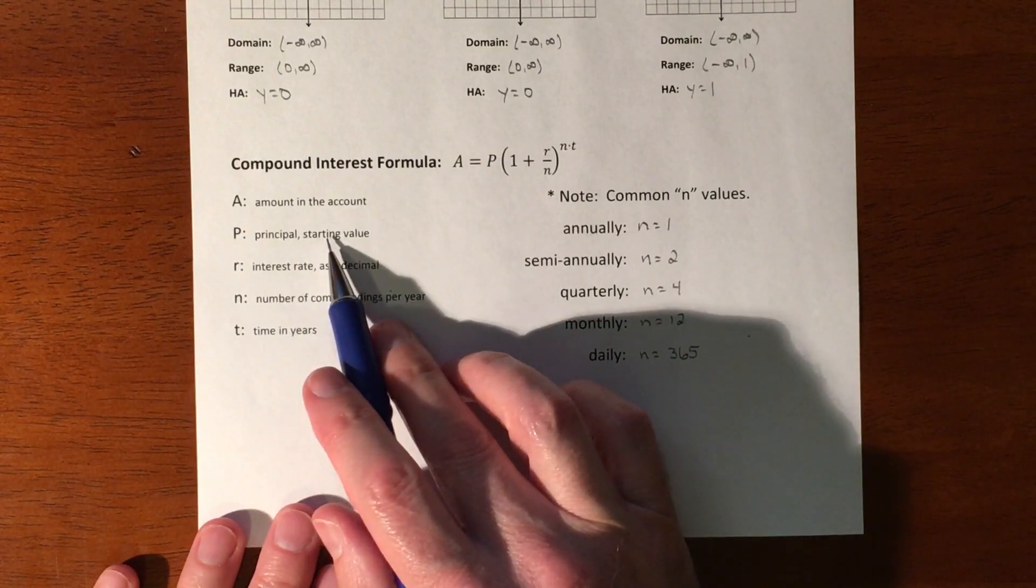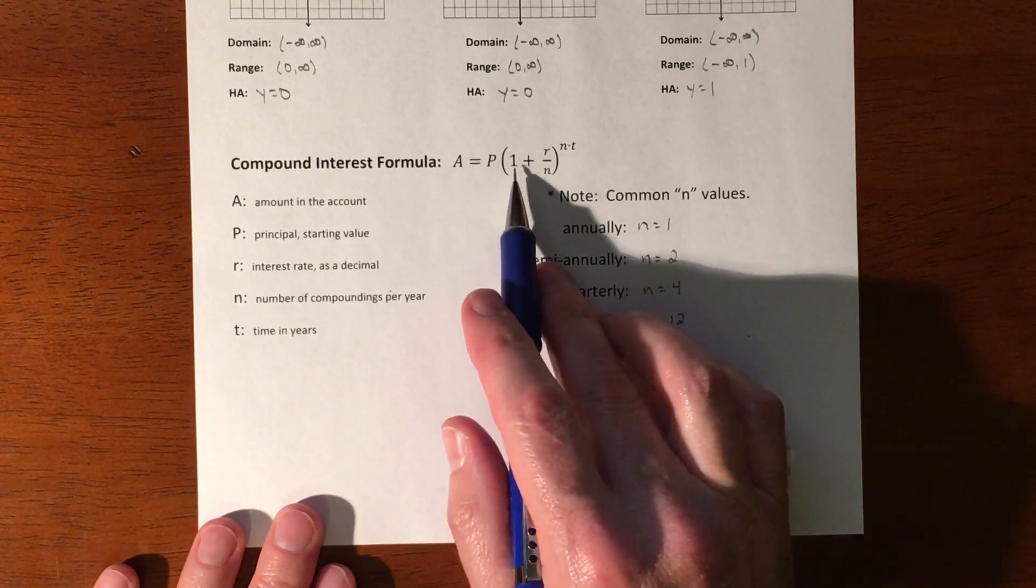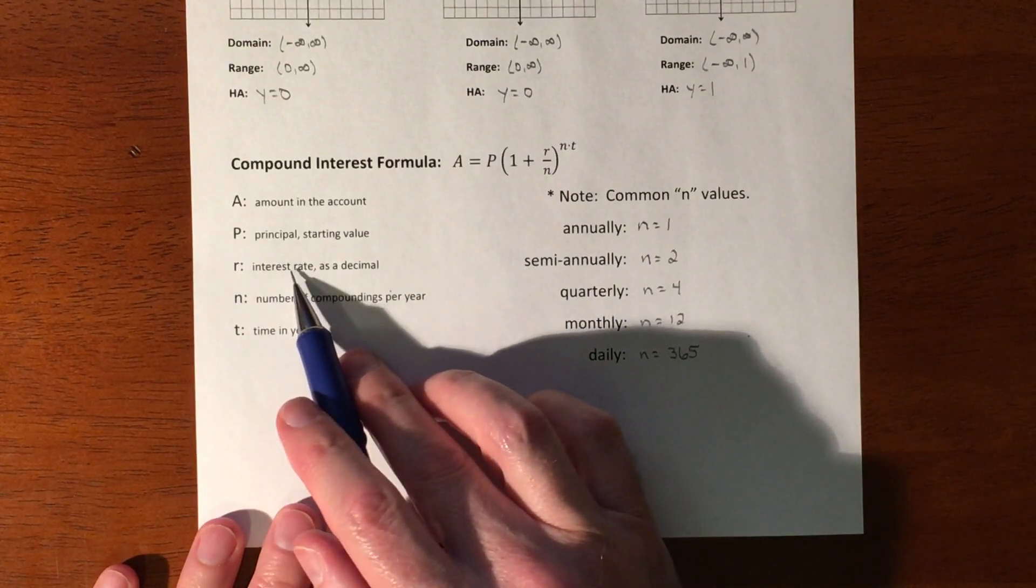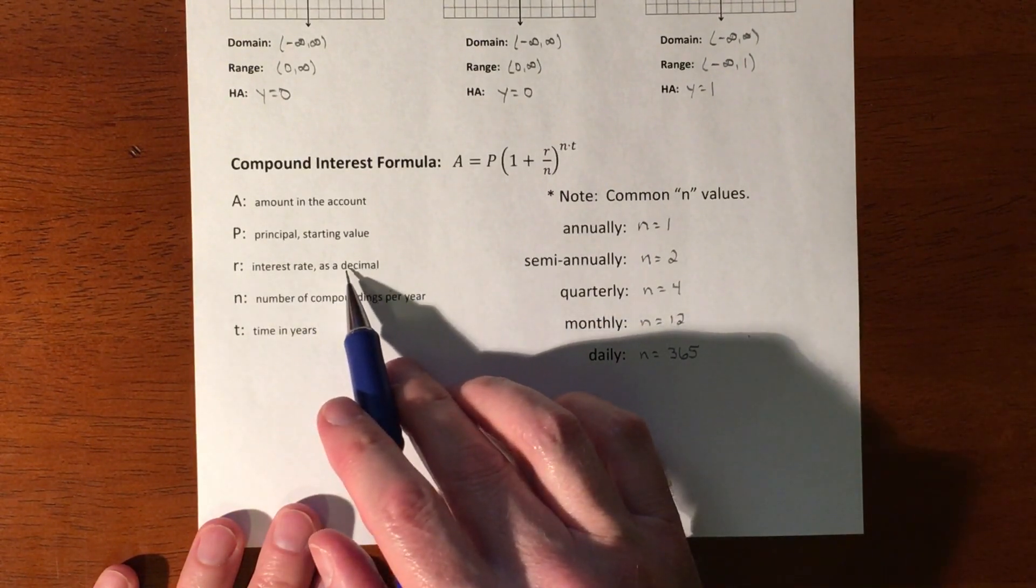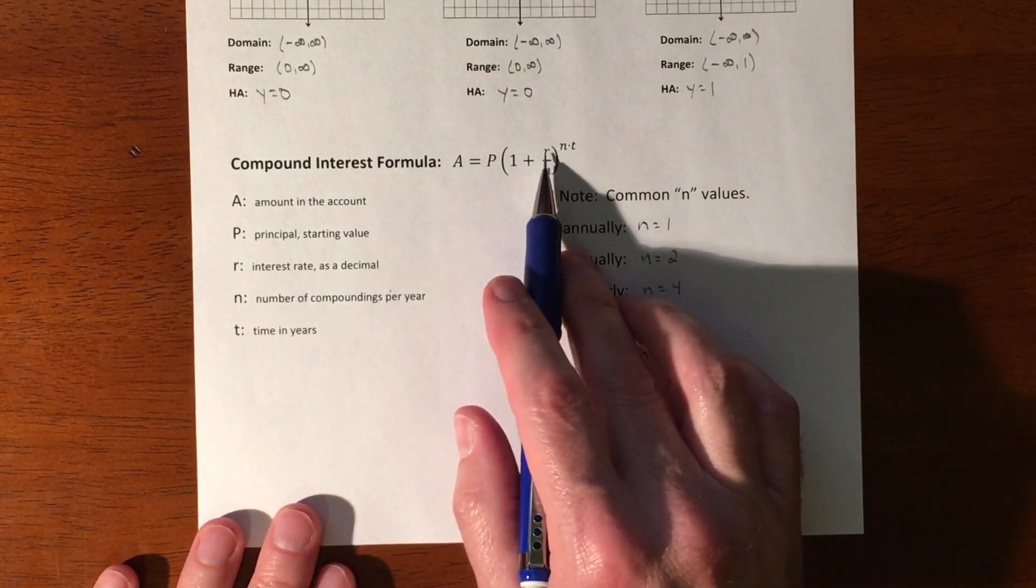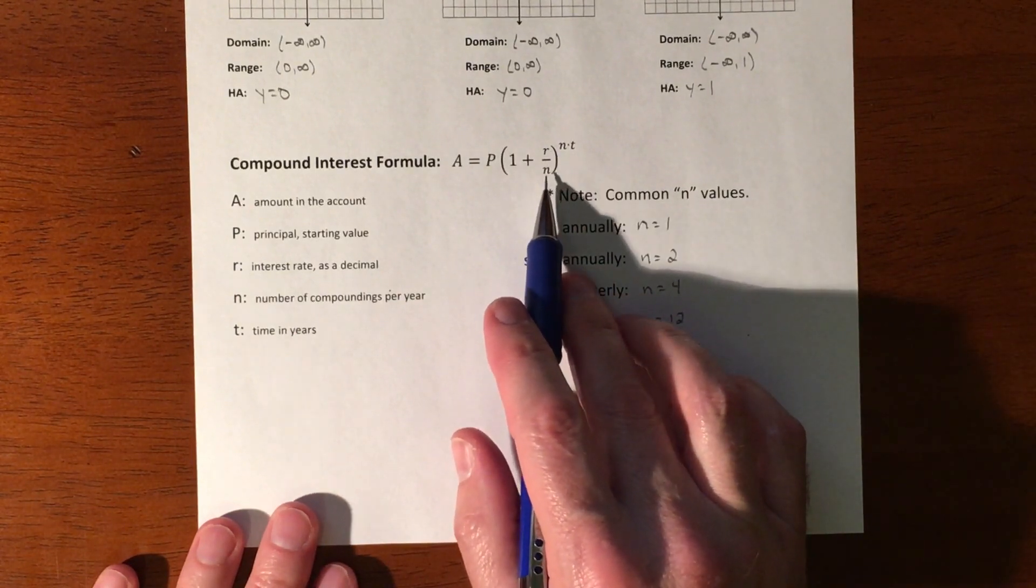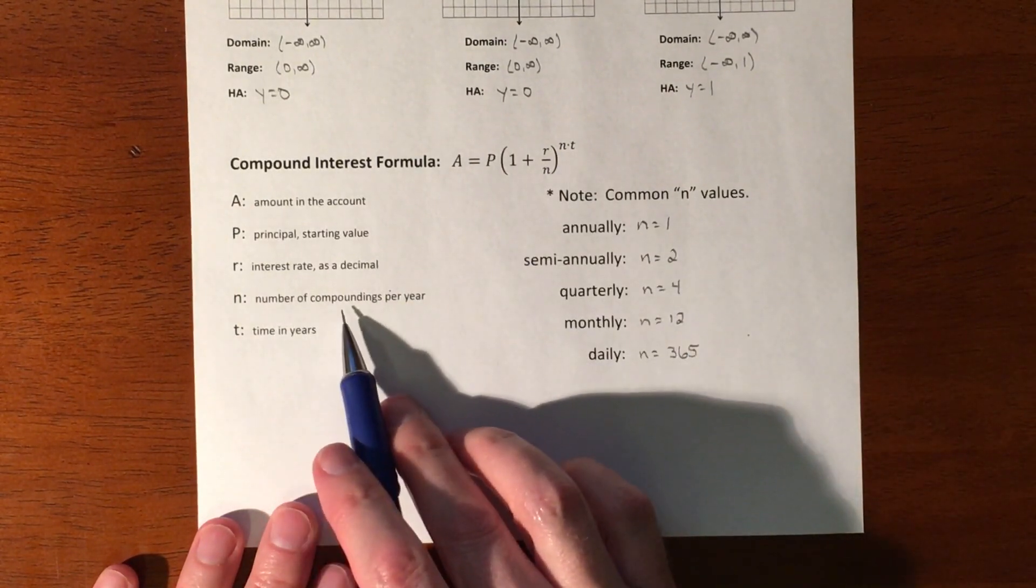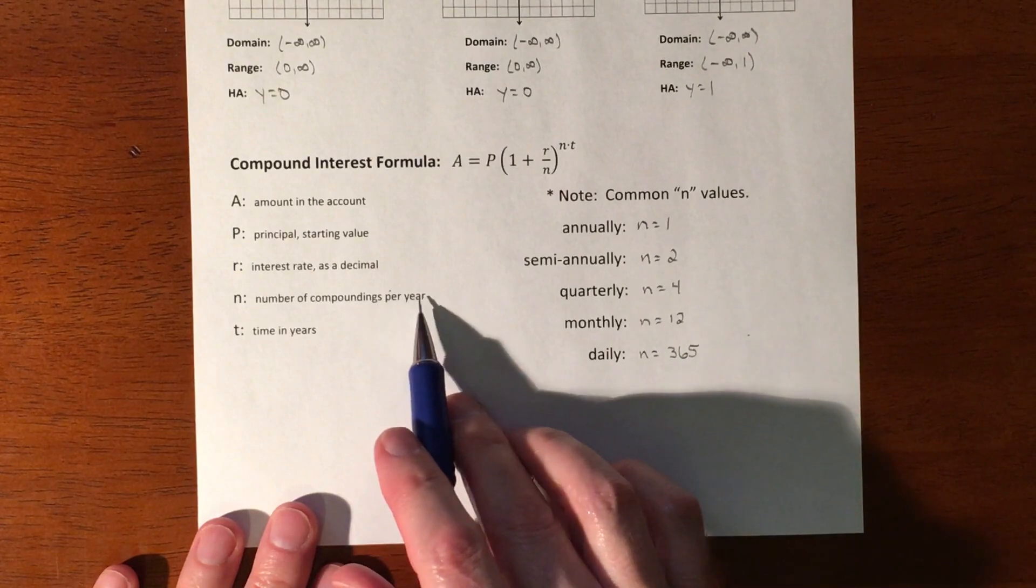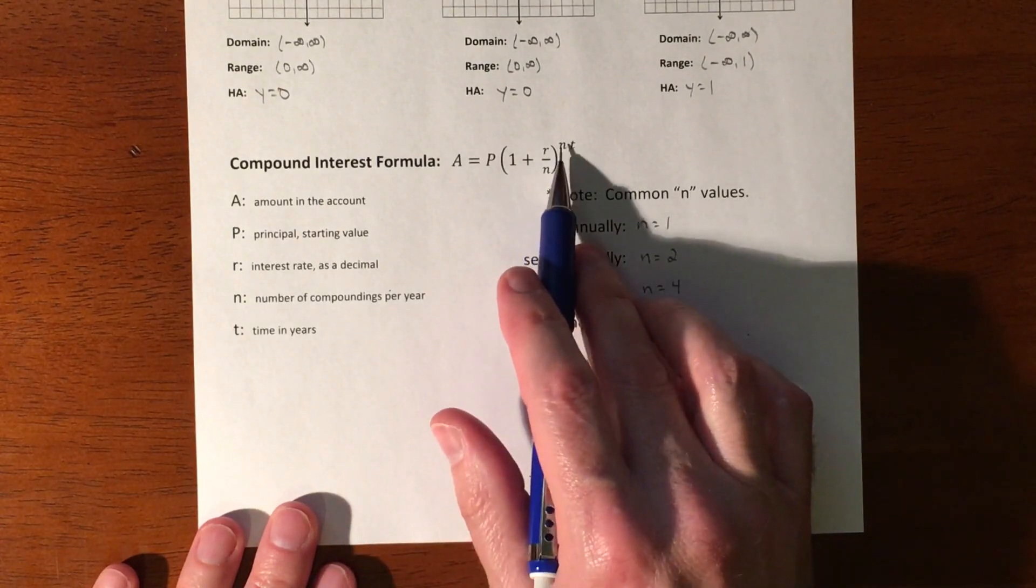Then one plus your rate—r is your rate, the interest rate. Make sure you turn it into a decimal, so if it's five percent you need it to be 0.05. Then divided by n—n is how often you're compounding something per year.